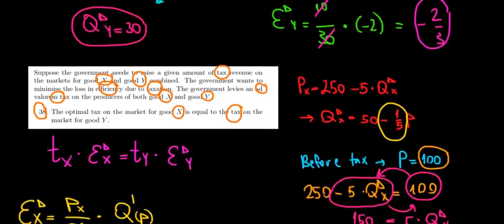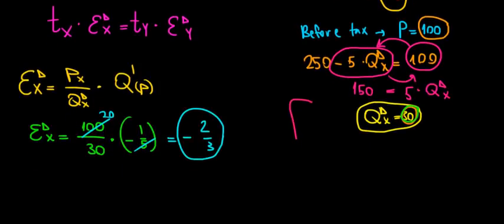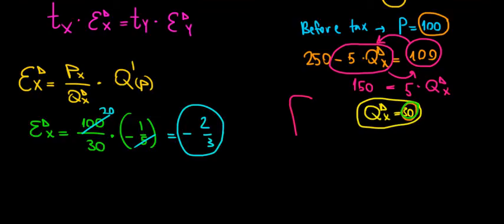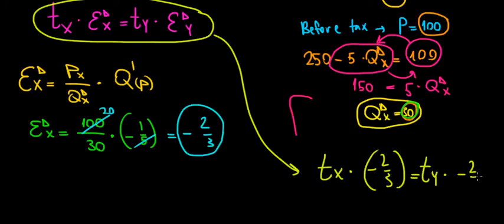As we said, the elasticity of demand for good Y is also minus 2 over 3. So let's substitute this data into our formula for minimizing the loss in efficiency and see what we find out. We're going to substitute the elasticity of demand for good X which is minus 2 over 3. Tax of X times minus 2 over 3 is equal to the tax on good Y multiplied with also minus 2 over 3. Now what do we see?